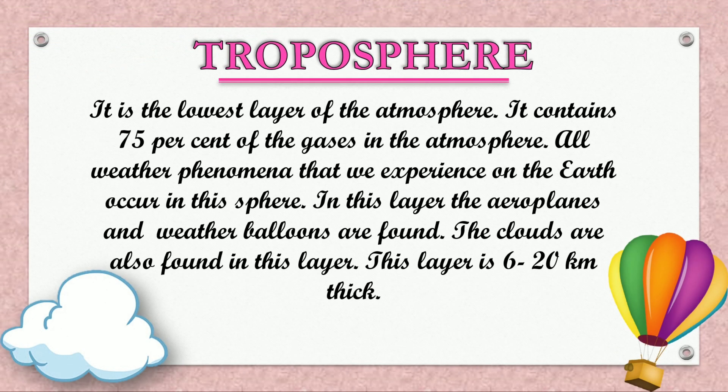Troposphere: It is the lowest layer of the atmosphere. It contains 75% of the gases in the atmosphere. All weather phenomena that we experience on the Earth occur in this sphere. In this layer, aeroplanes and weather balloons are found. The clouds are also found in this layer. This layer is 6 to 20 kilometers thick.